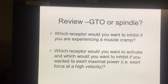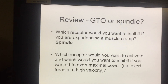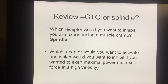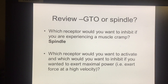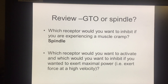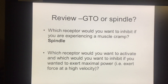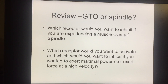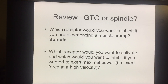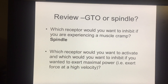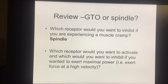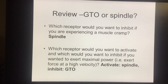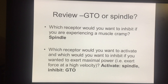Which receptor would you want to inhibit if you're experiencing a muscle cramp? The correct answer is the muscle spindle. During a muscle cramp, it's an involuntary contraction — your spindle is firing like crazy, causing this painful reflex contraction. If you stretch the cramping muscle, it activates and fatigues the spindle, alleviating the cramp. For the next question — which receptor to activate and which to inhibit for maximal power output at high force and velocity — you'd want to activate the spindle for that stretch reflex contraction, and inhibit the GTO, which normally inhibits muscle contraction.